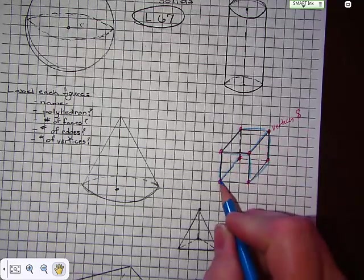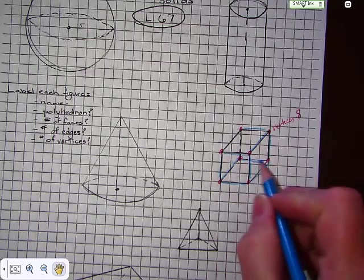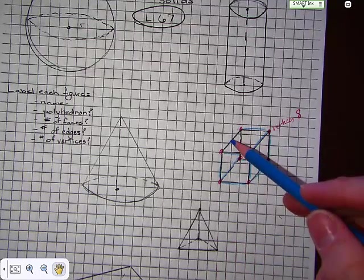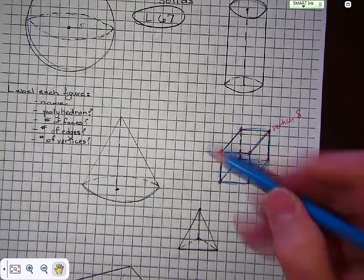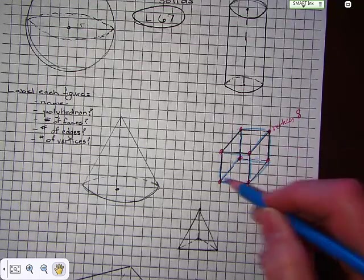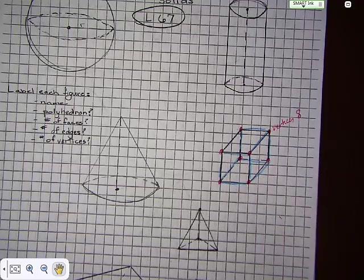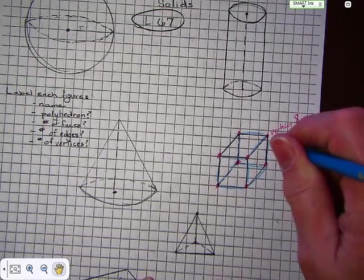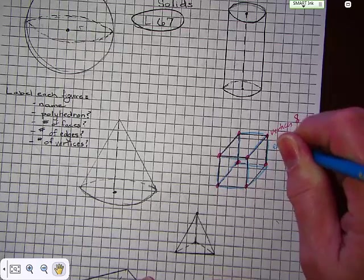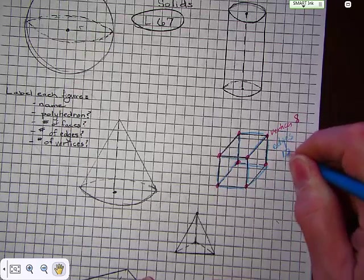Everything I'm marking in blue are edges. So you have one, two, three, four, and then you have five, six, seven, eight, nine, ten, eleven, twelve. So when it comes to edges, this one has twelve.